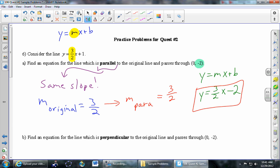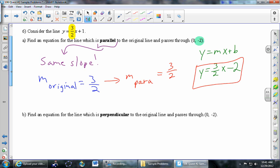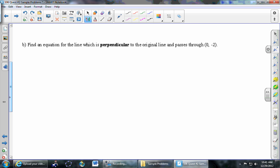Part b, find an equation for the line which is perpendicular to the original line and passes through 0, negative 2. So same idea here. Perpendicular is supposed to cue you into the idea of slope.